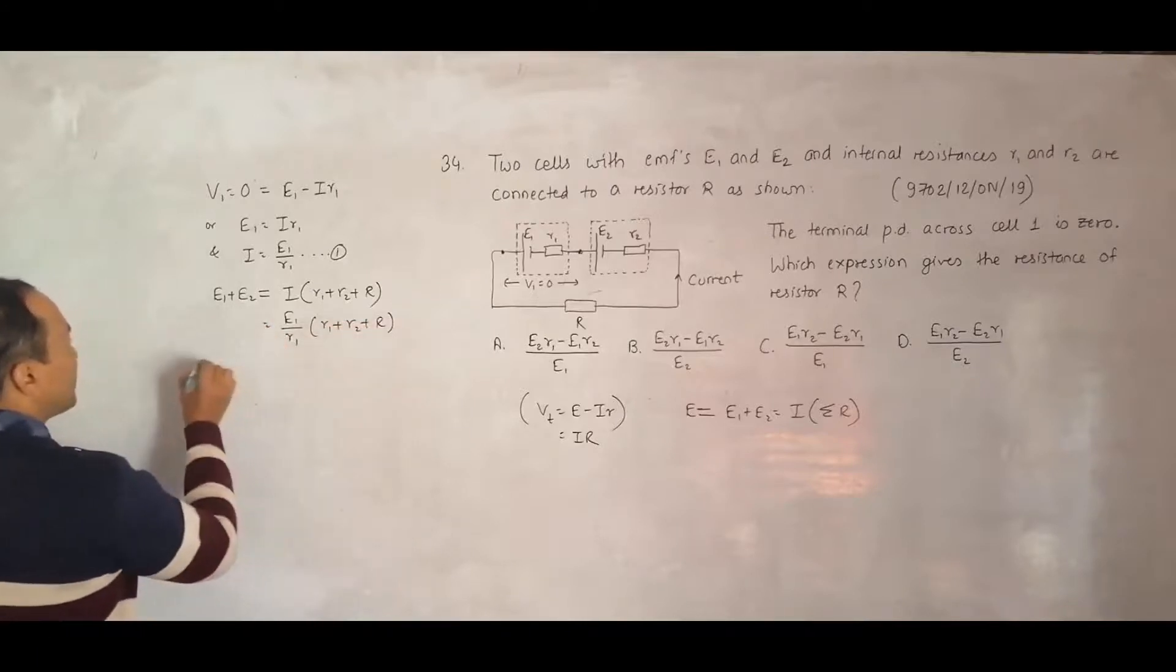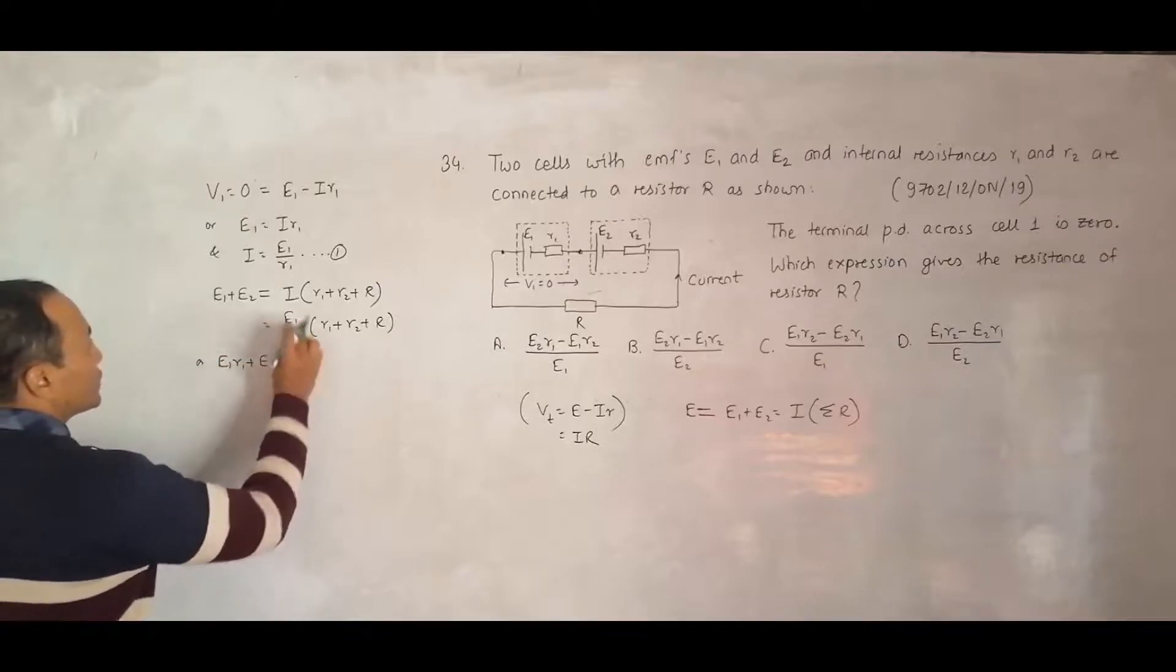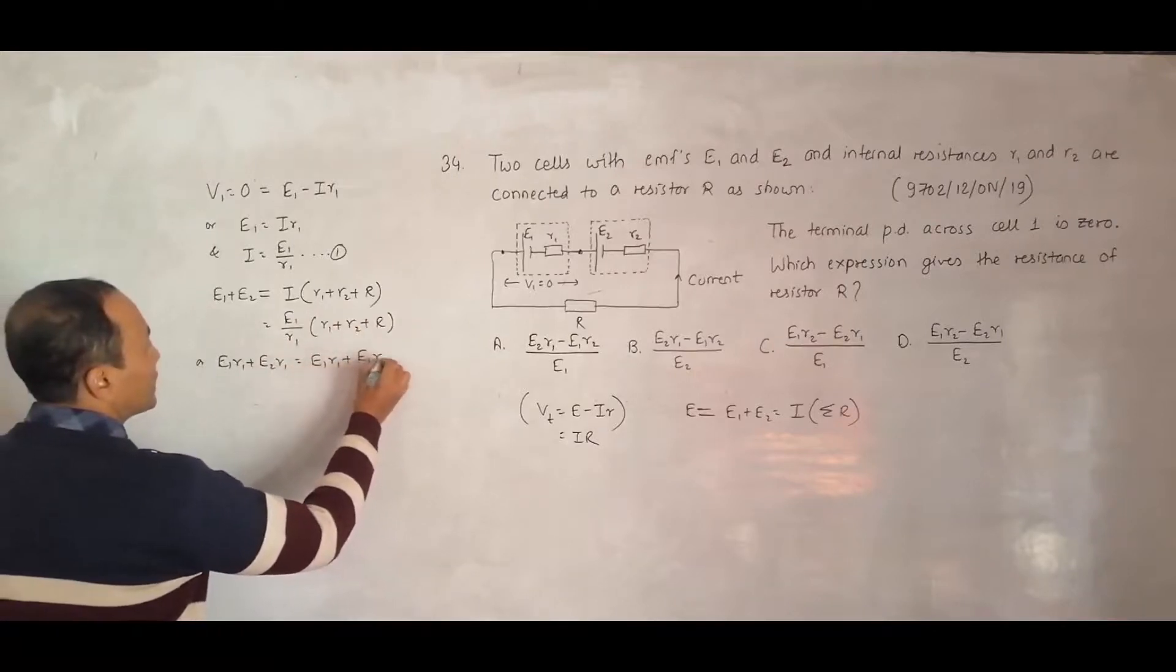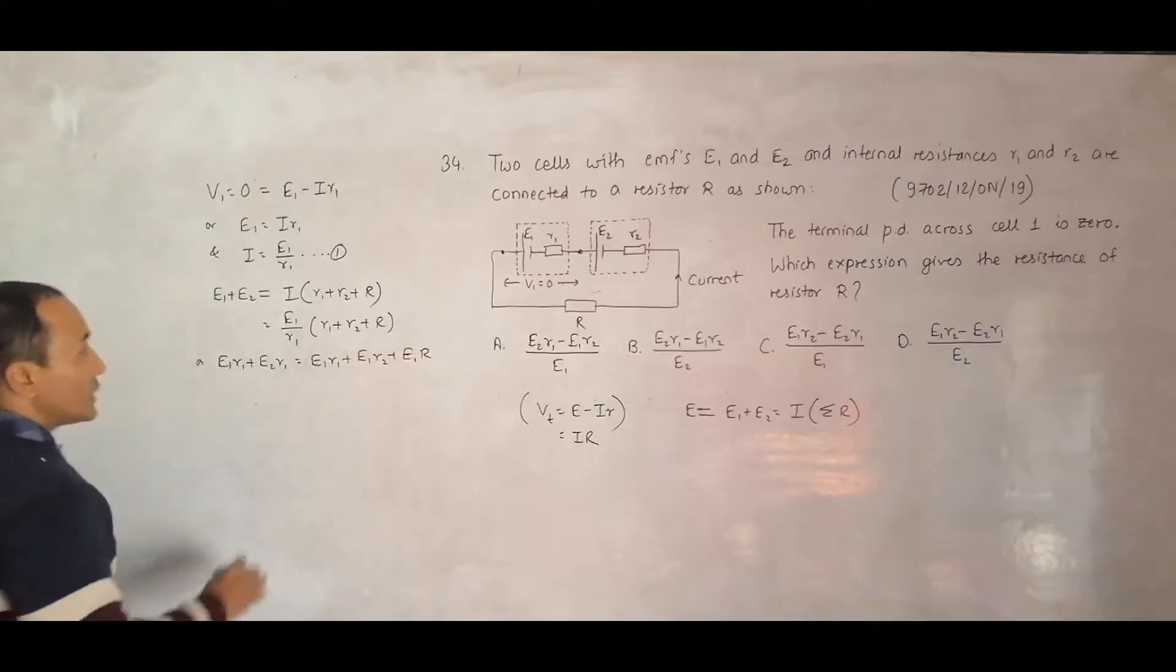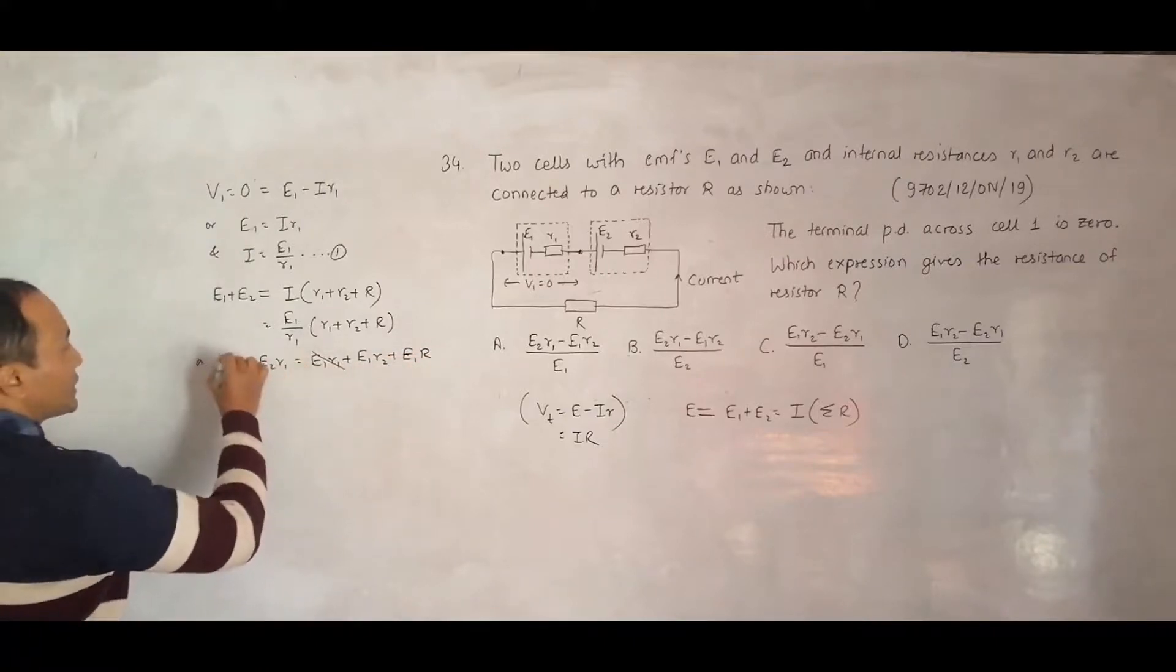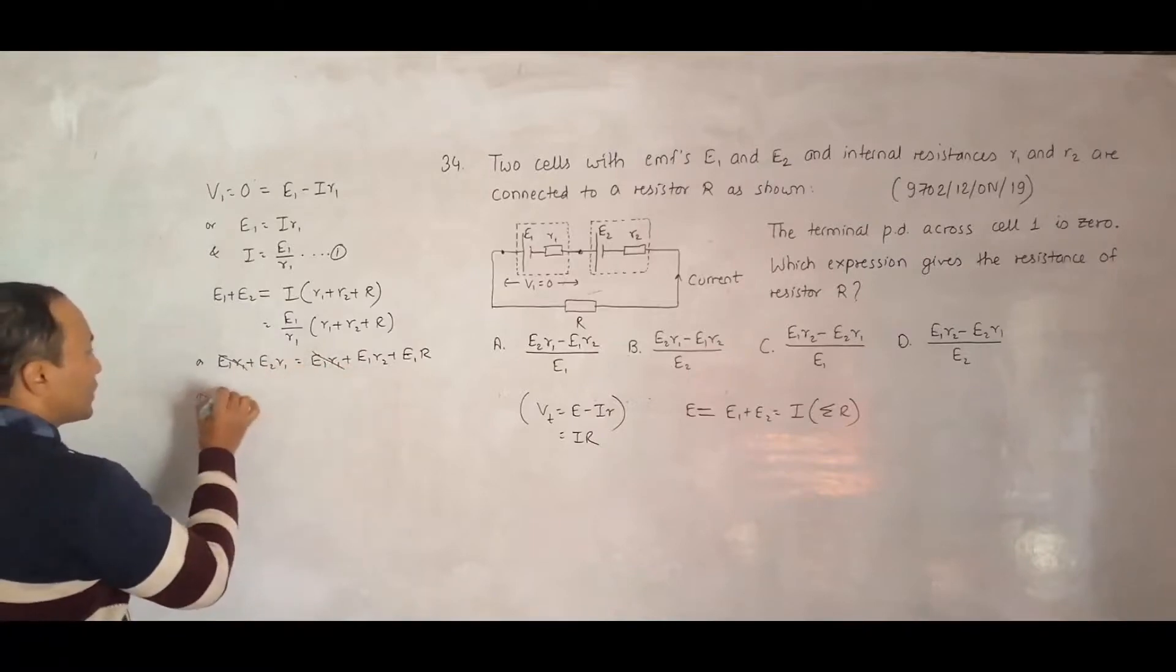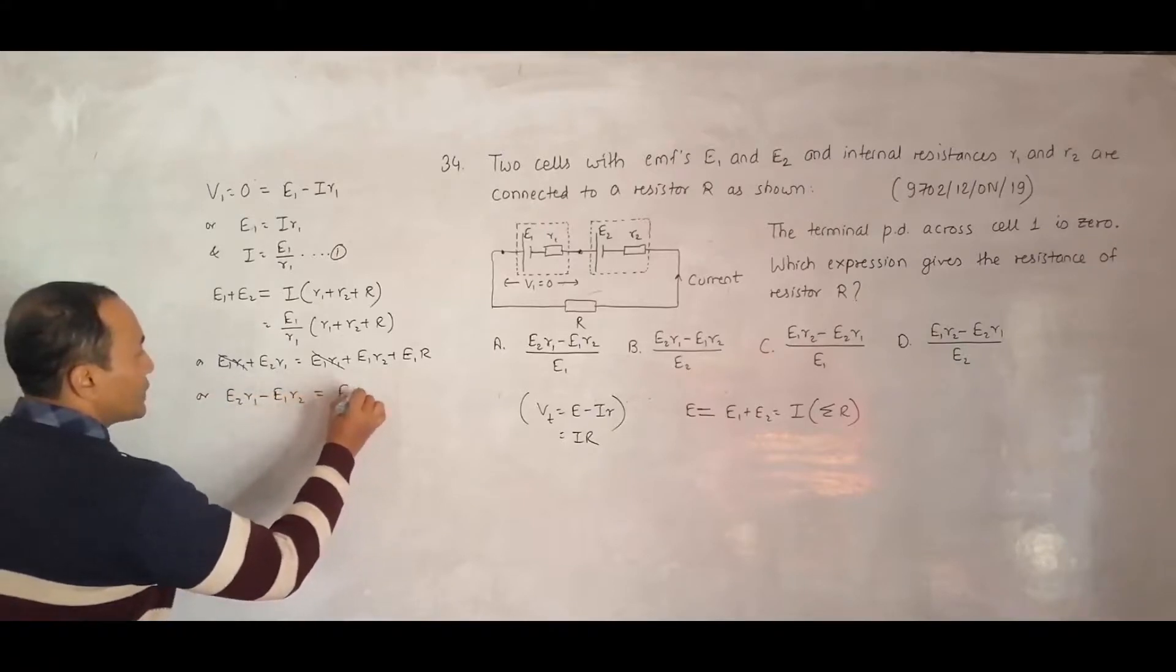This R comes here. When it comes here, it will be equal to E1 R1 plus E2 R1 equal to, multiply this, it will be E1 R1 plus E1 R2 plus E1 into R. Now, this and this goes, what remains here is, I will shift it here. E2 R1 minus E1 R2 will be equal to E1 into R.